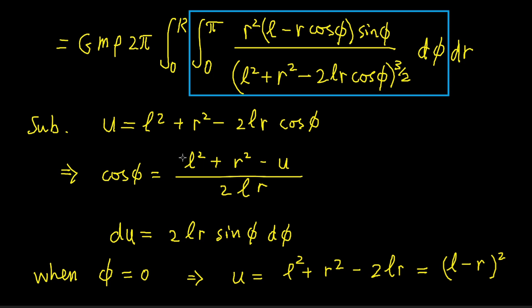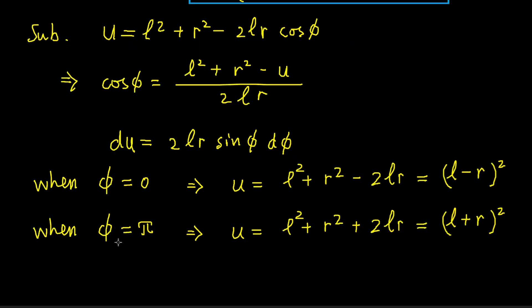We also need to replace the integration limits. When φ equals 0, u is L² + r² - 2Lr, which is just (L - r)². And similarly, the new upper limit is the value of u when φ equals π. And this gives us (L + r)².